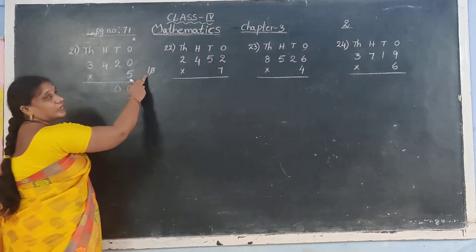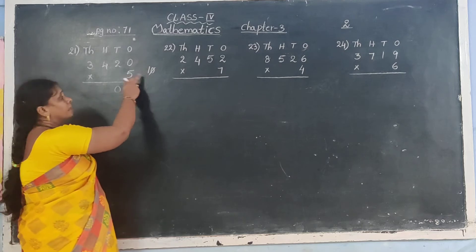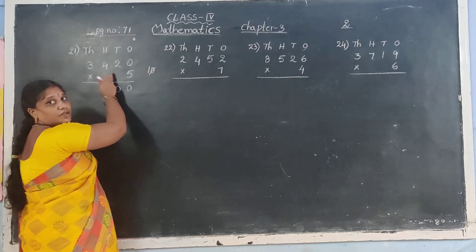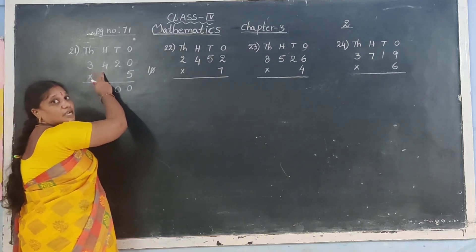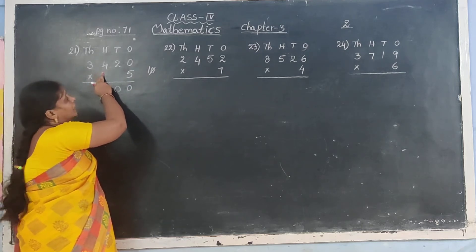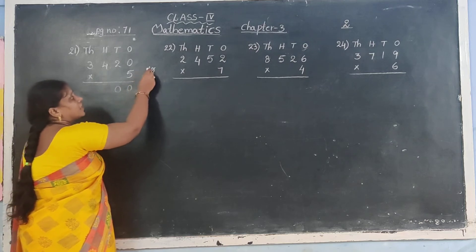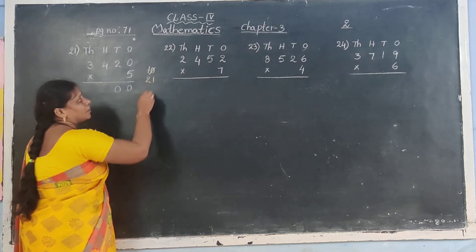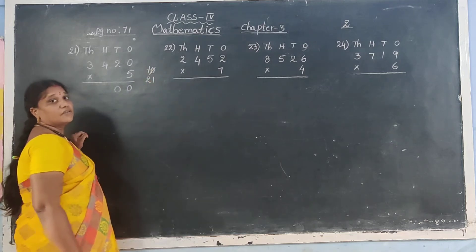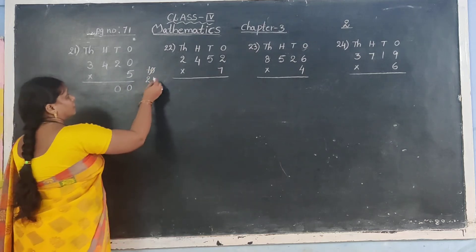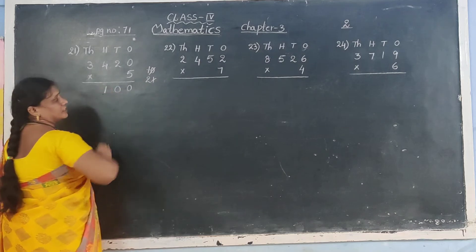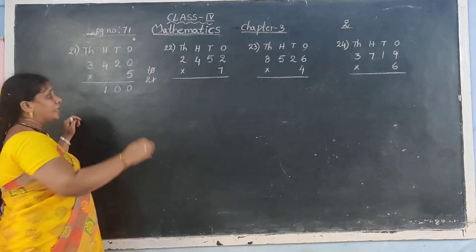Answer: carry 1. 5, 4 are 20. 20 plus 1 is 21. Write 1, carry 2. Next: 5, 3 are 15. Write 5 in answer. Then 15 and carry number. Answer. Next.